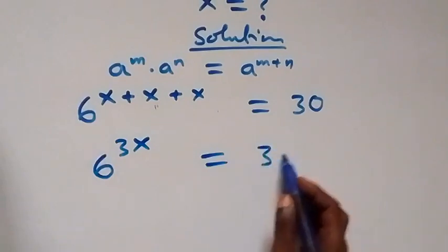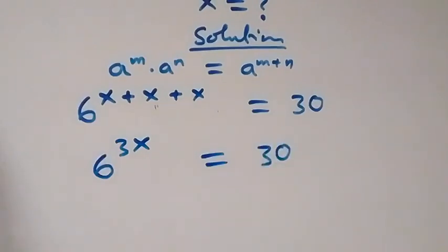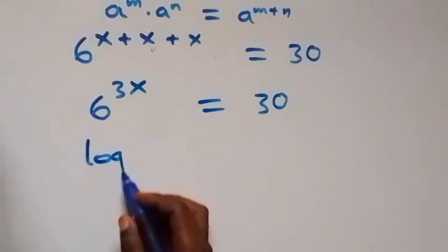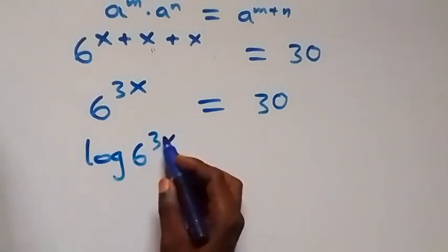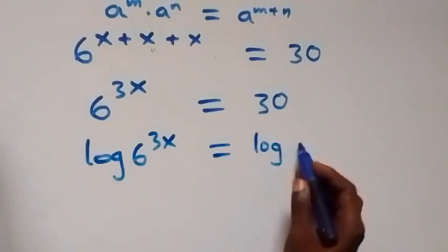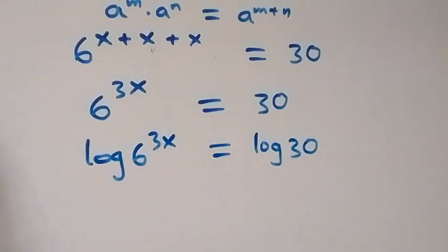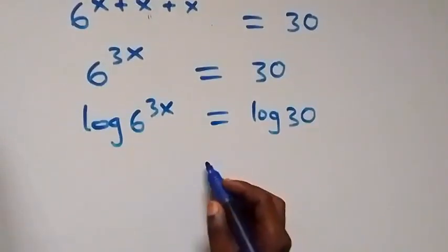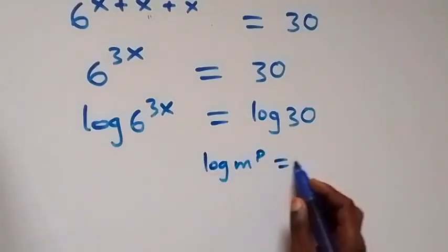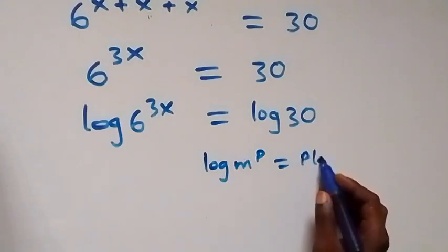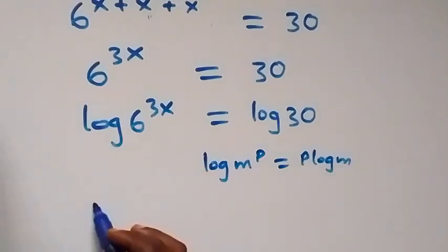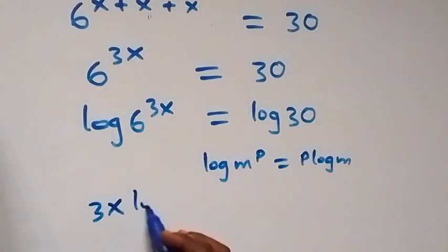That equals 30. Now let's take the log on both sides: log of 6 raised to power 3x equals log 30. From the power rule of logarithms, log m raised to power p equals p times log m. Here the power is 3x, so this becomes 3x log 6.